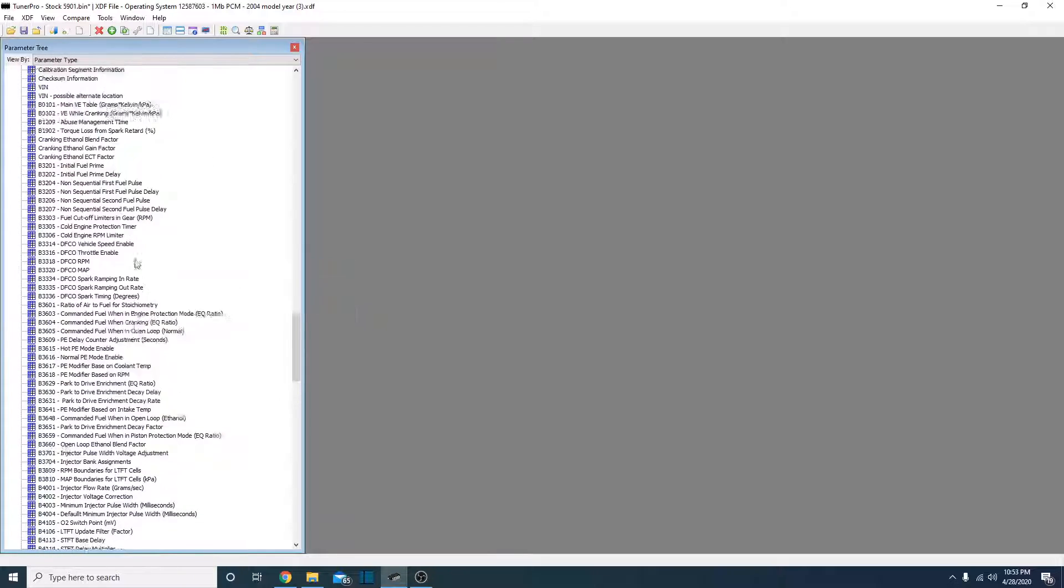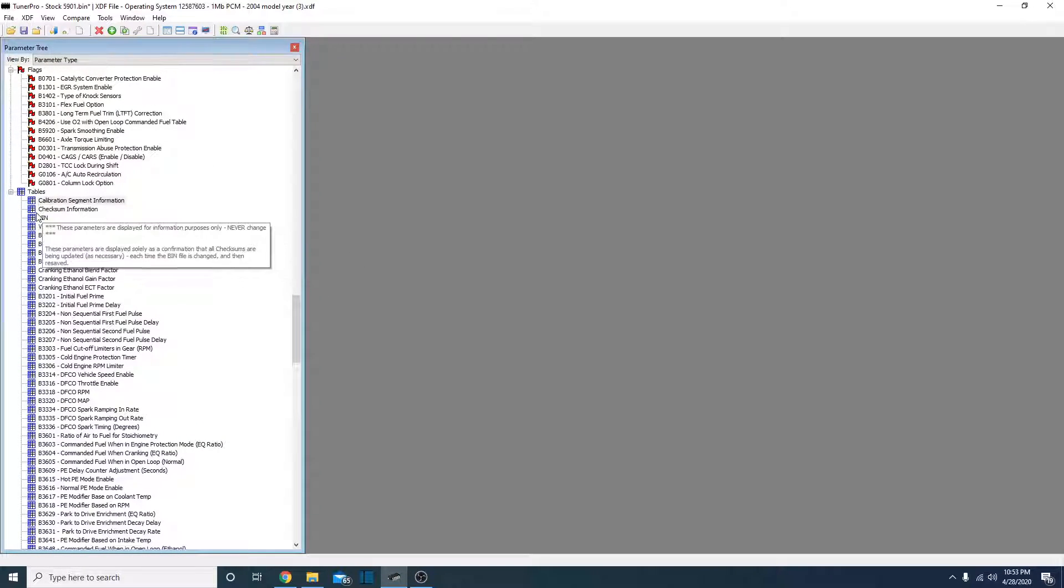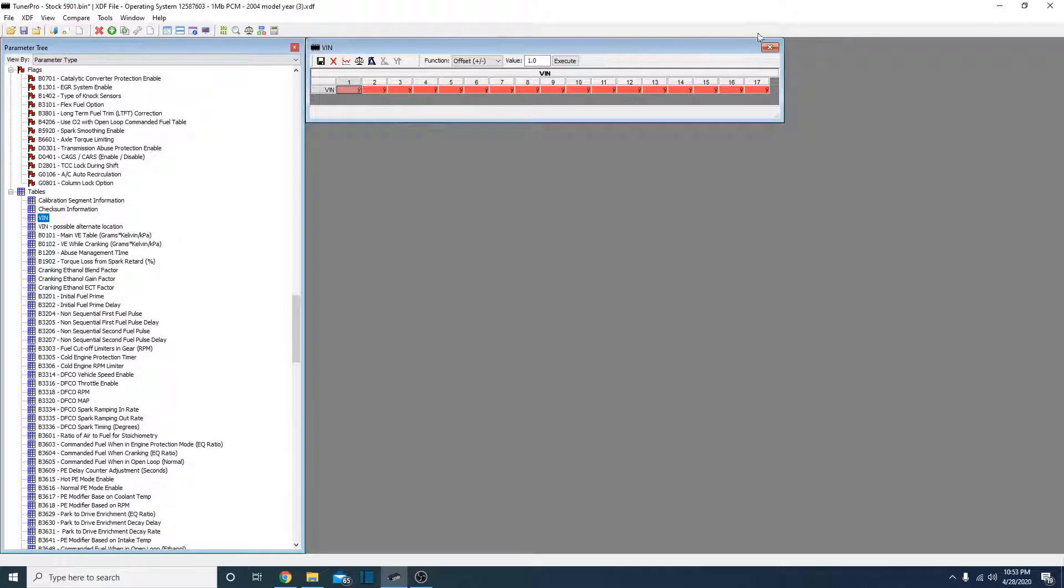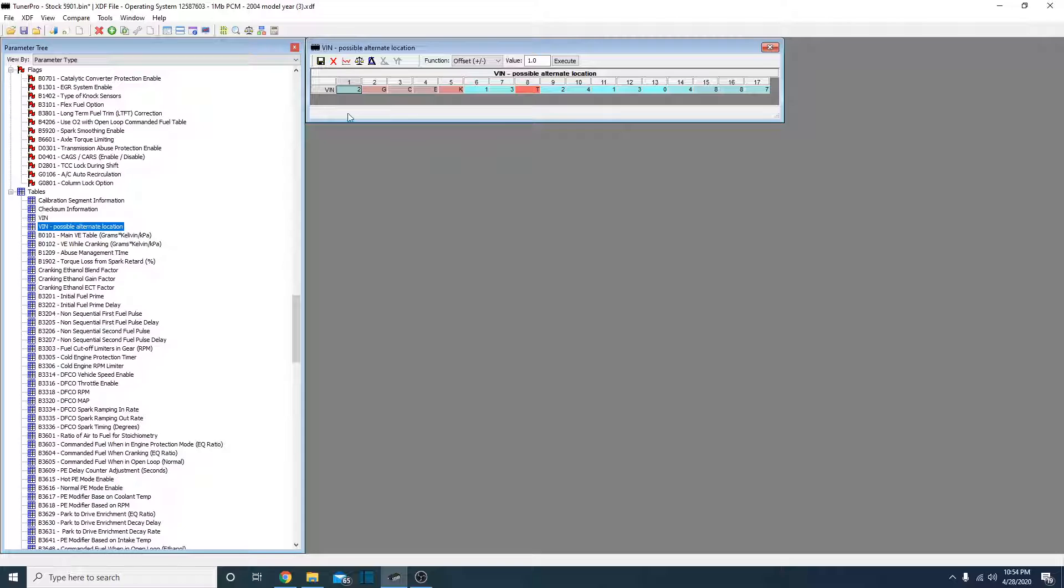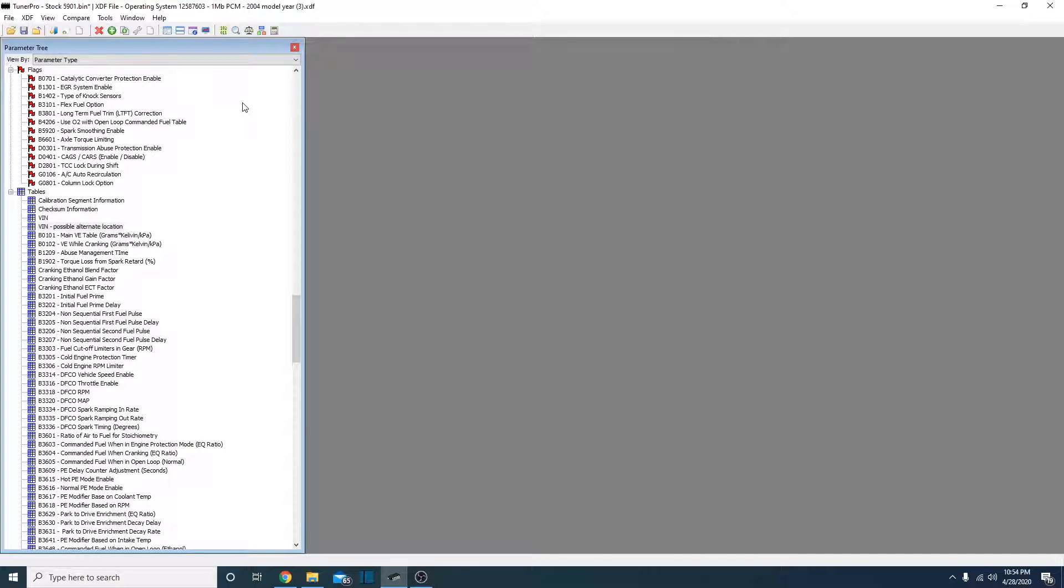Another common one that you're going to need to do is VIN. VIN is not stored in PIT VIN location, it's at possible alternate location. Here is a VIN number, you can just change that to whatever you need to. If you decided you didn't want to delete VATS and you just wanted to set the correct VIN number on there, this would be where you would go to do that.